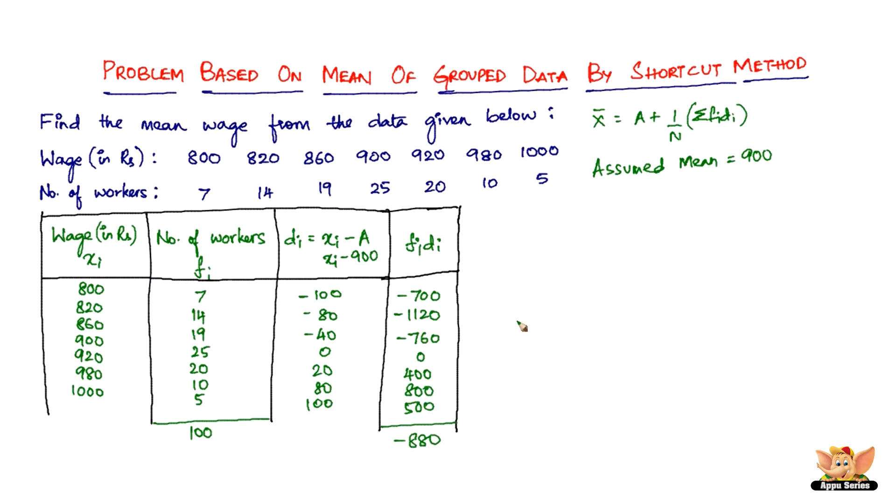So now let's substitute these. We've got x̄ equals A is 900 plus 1 divided by 100 times minus 880. So the zeros get cancelled, it is negative 8.8. So 900 minus 8.8 is the mean, which is nothing but 891.2.